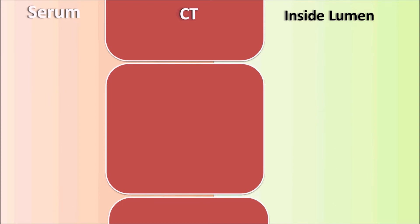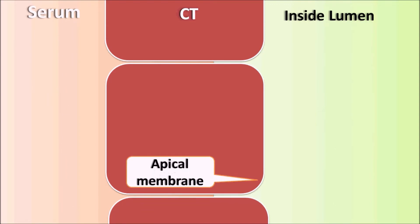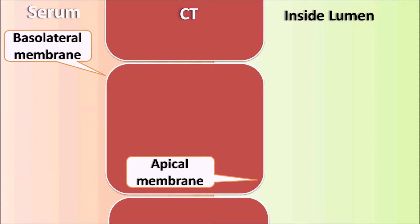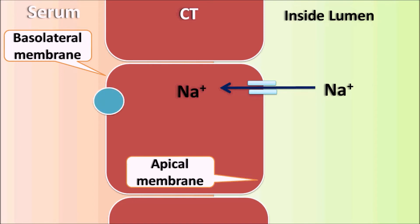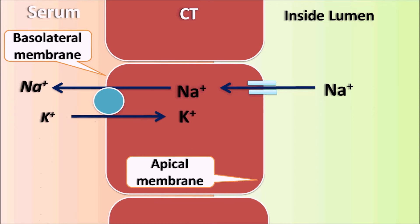Spironolactone acts at the collecting tubules. The inner membrane is called the apical membrane and the outer membrane is the basolateral membrane. Ions like sodium cannot cross easily and require specialized ion channels to enter the membrane. Once sodium is within the membrane, it is transported out by the sodium-potassium ATPase pump, which exchanges sodium for potassium. Sodium is reabsorbed and potassium is excreted into the lumen.